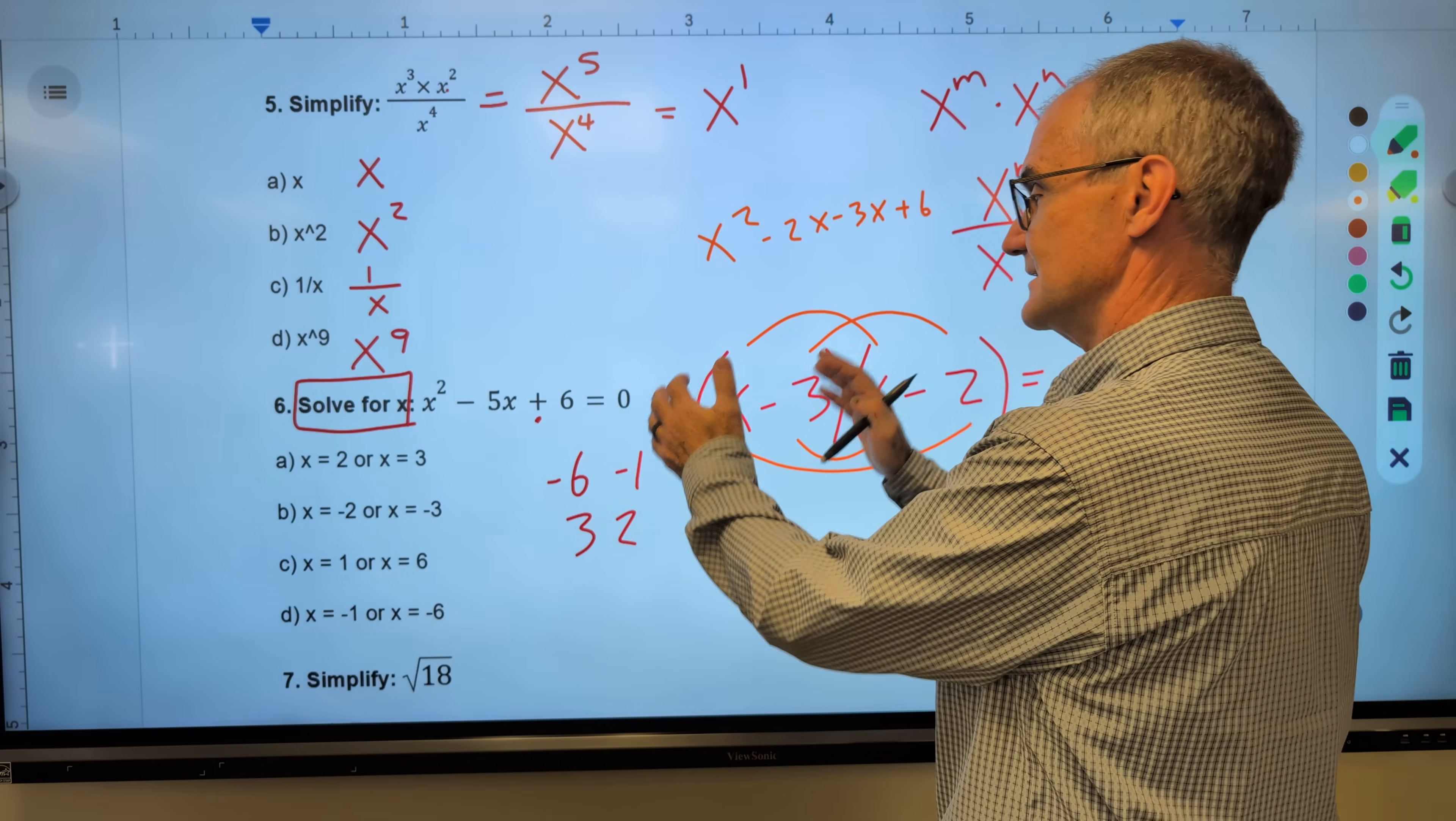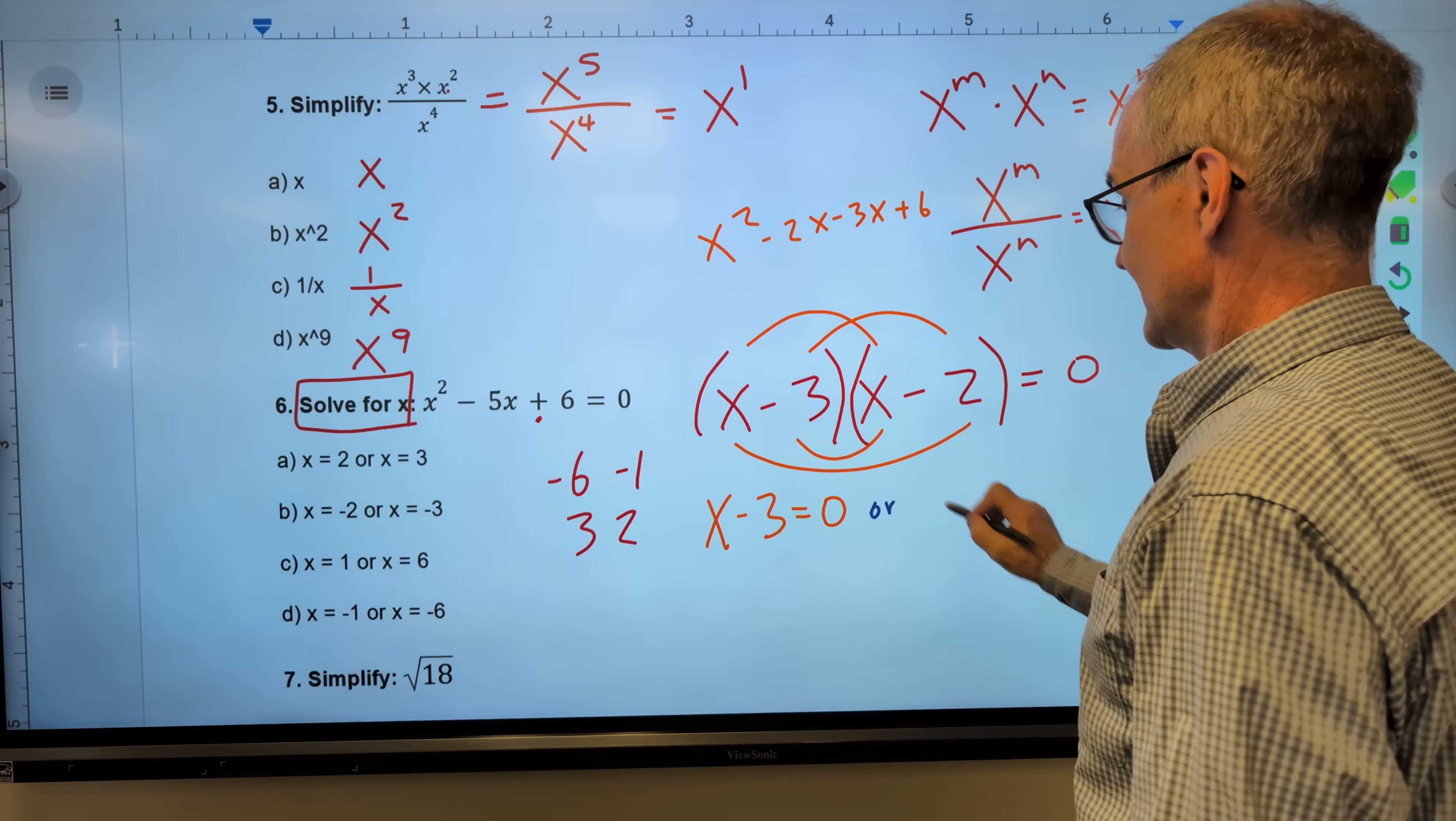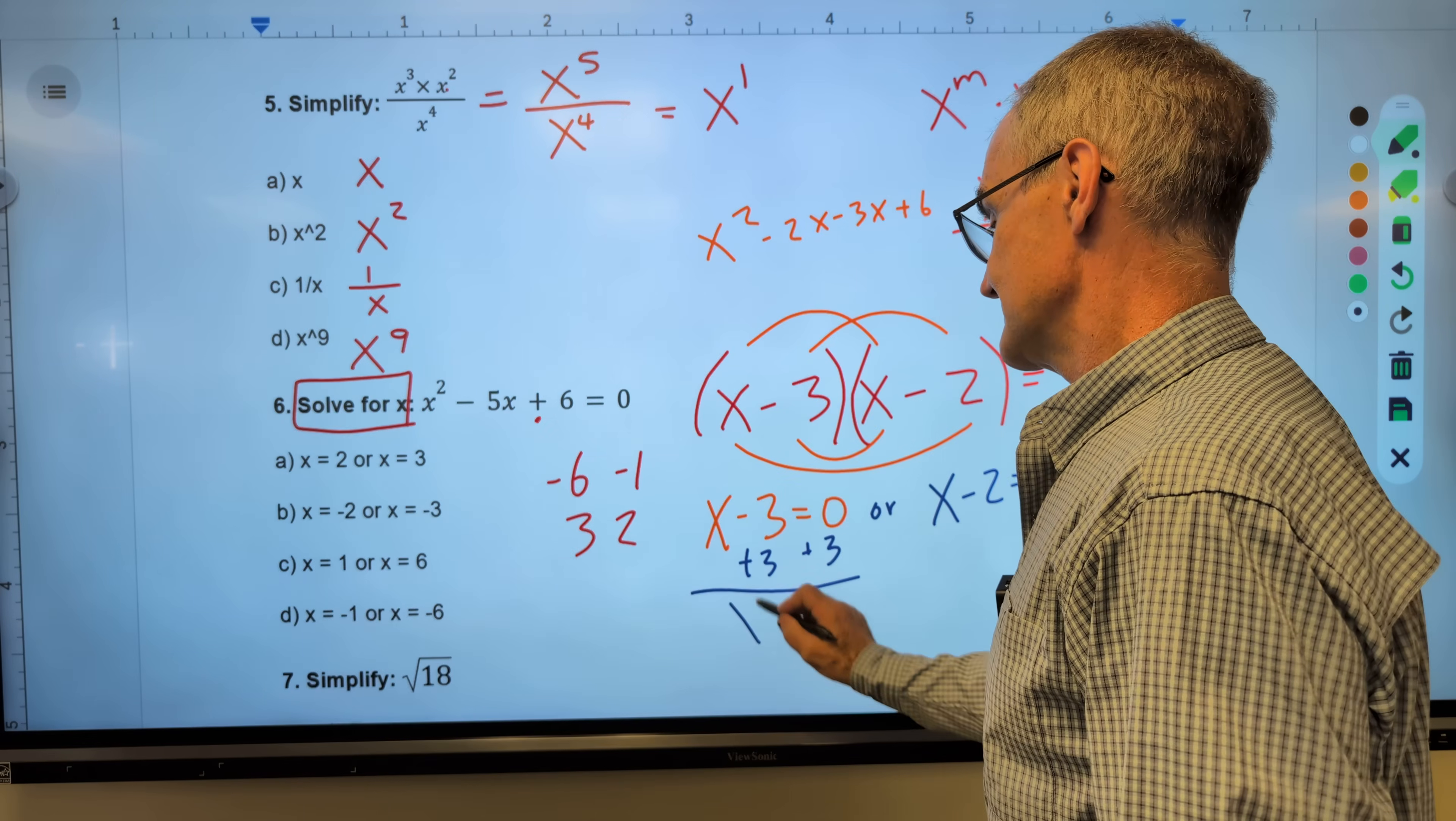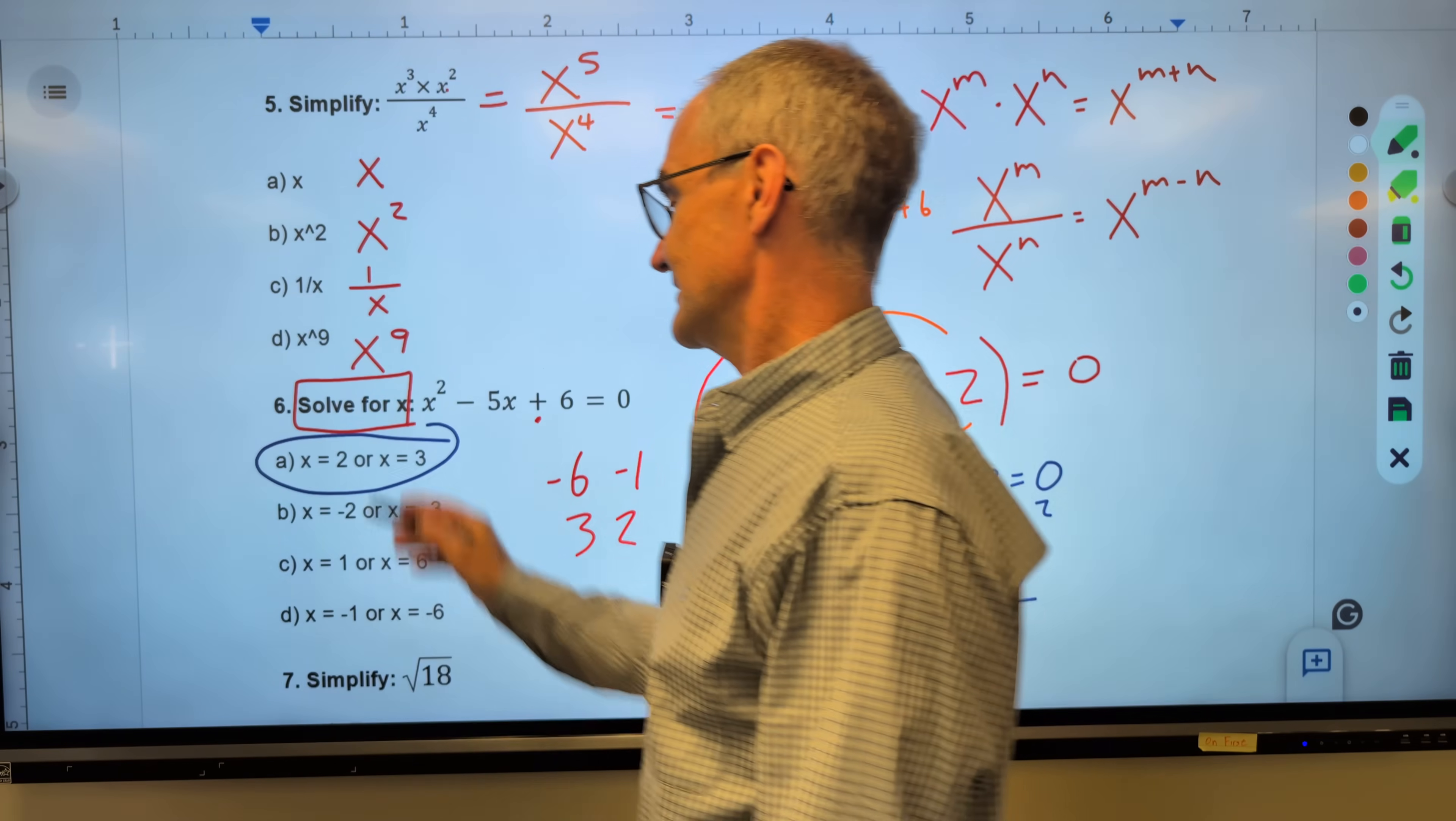Now that I factored it correctly, the whole reason of factoring like this is to use a zero product property. I have this quantity times this quantity is equal to 0. So that means either x minus 3 has to be equal to 0, or x minus 2 has to be equal to 0. So now I have an equation here. I'm going to add 3 to both sides. x is equal to 3, or I'm going to add 2 to both sides, and get x is equal to 2. Two solutions, either 2 or 3. Correct answer, answer A right there.